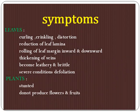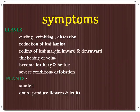The symptoms mainly concentrate on the leaves. Curling is one of the important characteristics of the leaves; crinkling and distortion are also important characters. Reduction of the leaf lamina size — the leaf size is also going to be reduced. Rolling of the leaf margin inwards and downwards also takes place.